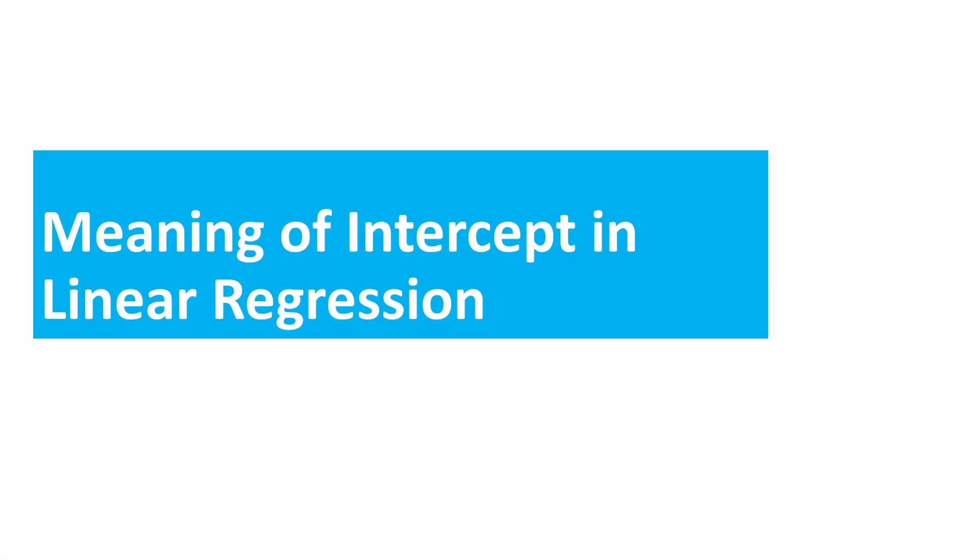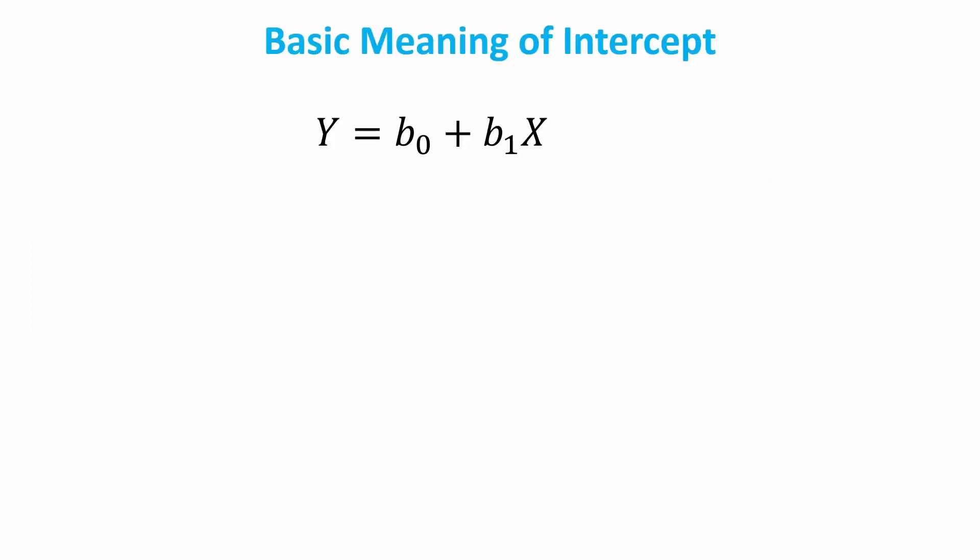In this tutorial, I'm going to explain the meaning of intercept in linear regression. This is the linear regression statement: it has y, which is the dependent variable, b0 which is the intercept, b1 which is the slope, and x which is the independent variable.